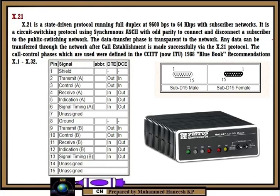It is a state-driven protocol running full duplex at 9600 bps to 64 kbps with subscriber network. It is a circuit switching protocol using synchronous ASCII to connect and disconnect a subscriber to the specific switching network. This includes specifications for DTE and DCE physical interface elements.